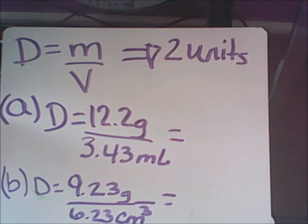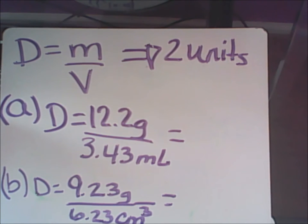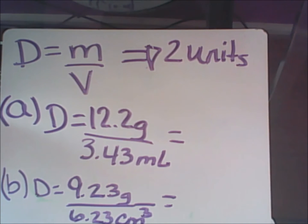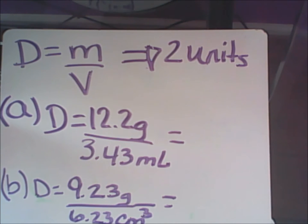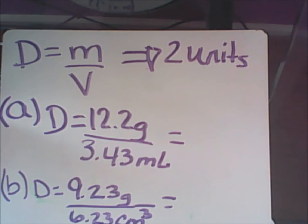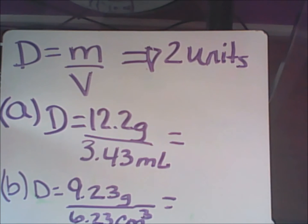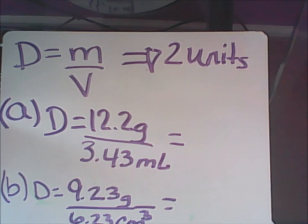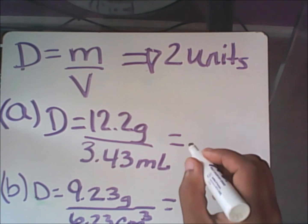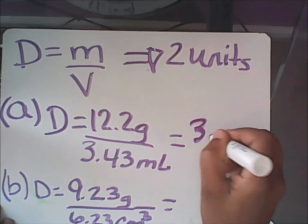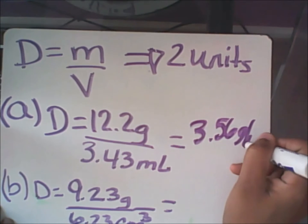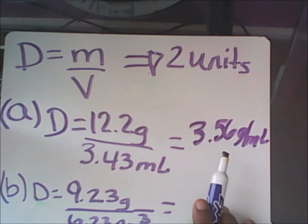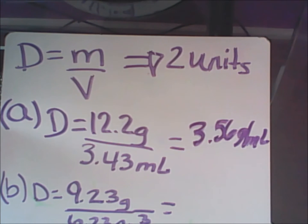In the first example, my density is equal to 12.2 grams (the mass) over 3.43 milliliters. I am going to divide those two numbers and I get a very long number of 3.55685. I am only going to record three of those numbers. My final answer would consist of 3.56 grams per milliliter. I rounded off the prior five to a six because of the significant digits rule.